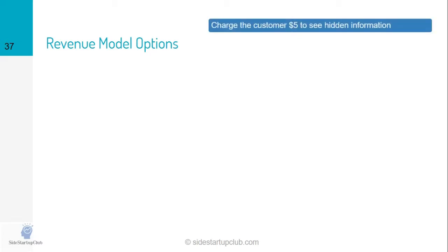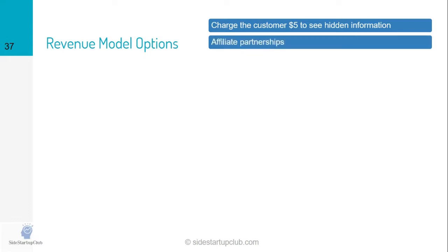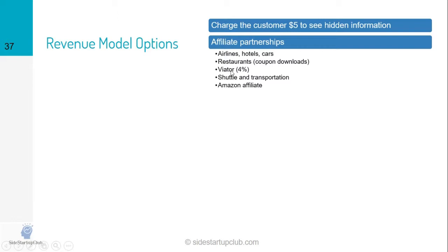Now let's look at all the different ways we can possibly create revenue through our travel website. Along the lines of selling a book, perhaps we could sell some of our premium information to the customer — say $5 to get all the information they want about Oaxaca. We can also do affiliate partnerships just like our competitors: using Skyscanner on our website, partnering with bigger restaurants, partnering with Viator for activities, partnering with shuttle companies, local car rental services, and Amazon to promote Oaxacan books and travel gear.